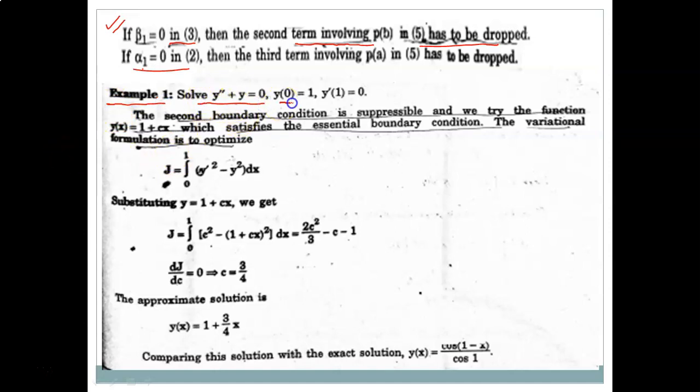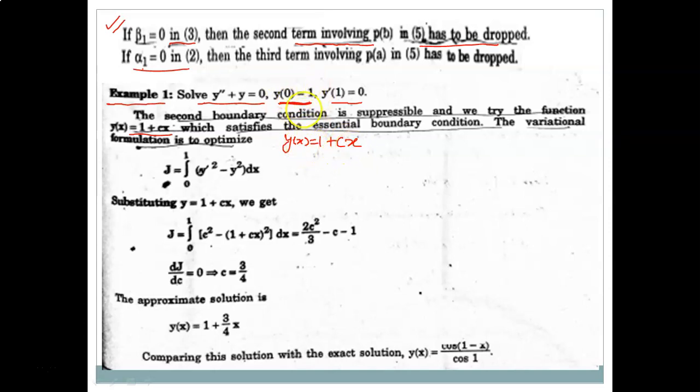Now consider Example 1, where the boundary conditions involve y'(1) = 0. The condition with a prescribed value is the essential boundary condition, and the boundary condition with the derivative is the suppressible boundary condition. We choose the approximate solution such that it satisfies the essential boundary condition. We choose y(x) = 1 + cx, because when x = 0, y(0) = 1, satisfying the essential boundary condition.